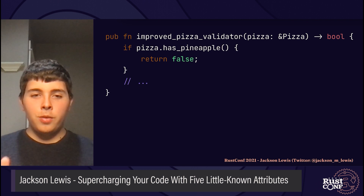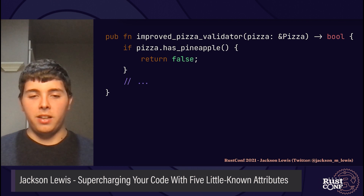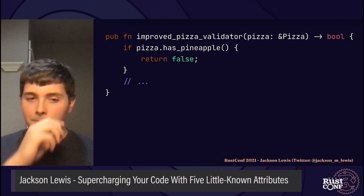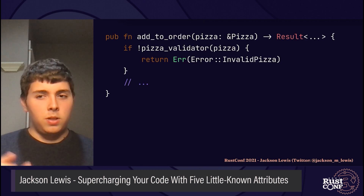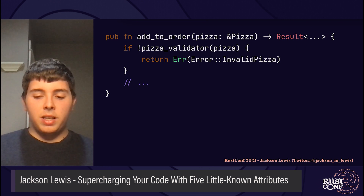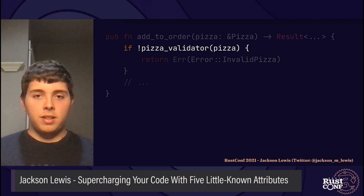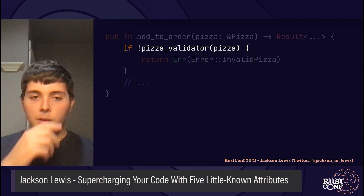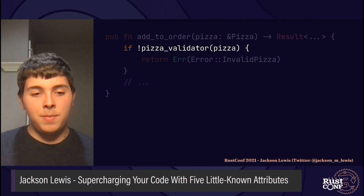A short while later, you've written a new and improved pizza validation function that outlaws pineapples, and you've replaced many of the existing calls to PizzaValidator with the new function. But there's a problem. A few days later, an order for pineapple pizza comes in, which shouldn't be happening. You identify the problem in a function called addToOrder — it turns out someone recently rewrote this code and in the process used the old validation function. But to be fair, there was little indication that using it was wrong. So, let's rewind time again — what should have been done to prevent this?